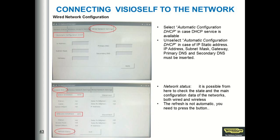If we look at the wired network, we have the possibility to select automatic configuration DHCP. We have to select this option if in the network there is a device assigning IP addresses automatically — in a dynamic way. Or we can disable this option if we want to enter a static IP address manually. Under network status, we can check if the device is connected to the network or not, and we can refresh the status with the button shown at the bottom of the page.